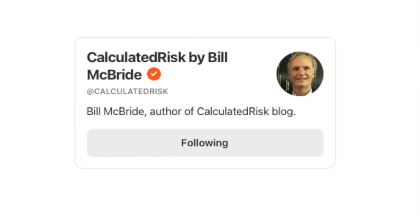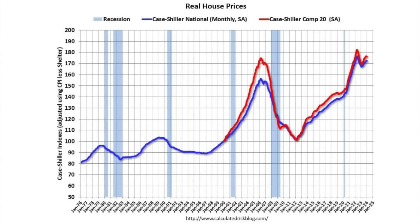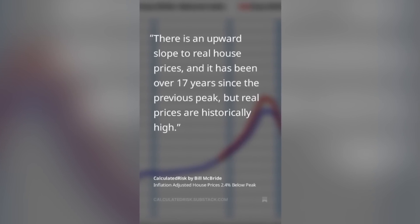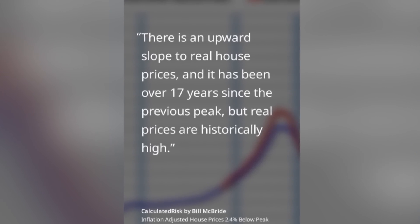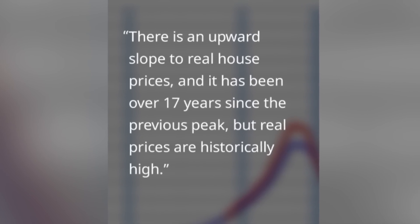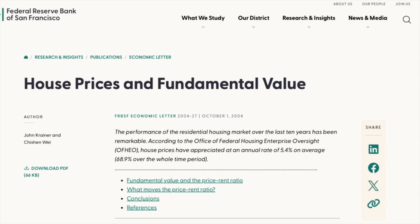Even experts like Bill McBride acknowledge that what is happening today is far beyond normal. He graphed real home prices over the last 50 years, showing home prices adjusted for inflation — stripping out inflation numbers to reveal the real price of a house. As you can see, we are actually 10% higher than the last peak, which occurred over 17 years ago. McBride notes there is an upward slope to real house prices, and that real prices are historically high.